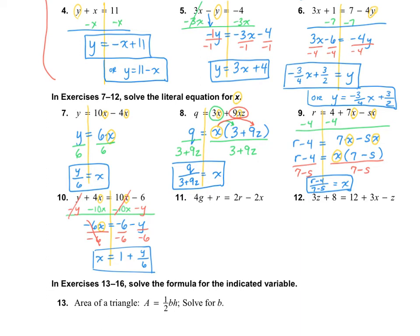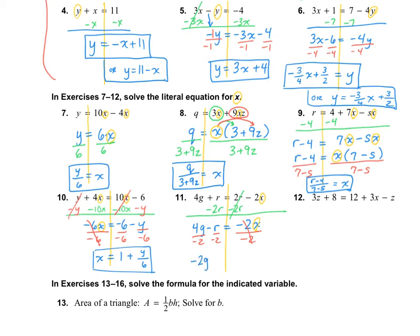Number 11: circle the X we need to solve for. We need to get rid of that 2R, so we subtract it, and it looks like it can combine with the R on the other side, giving 4G minus R equals negative 2X. Now divide by negative 2 on each part. 4 divided by negative 2 is negative 2G, and R divided by negative 2 is negative R over 2. So X equals negative 2G minus R over 2.